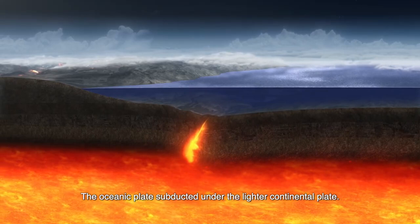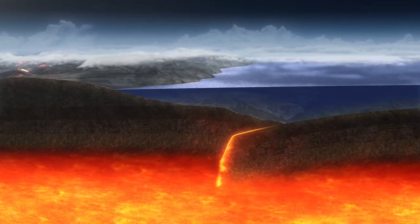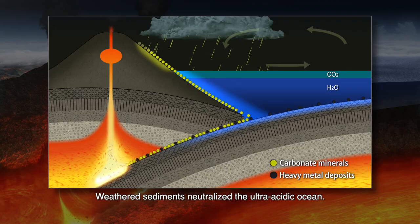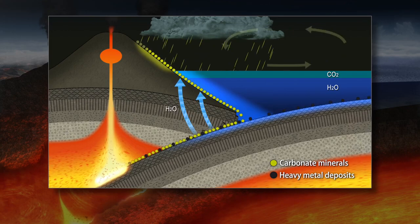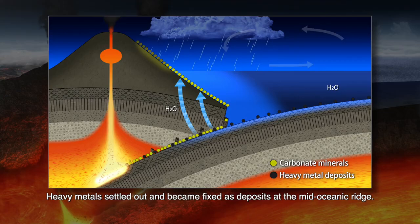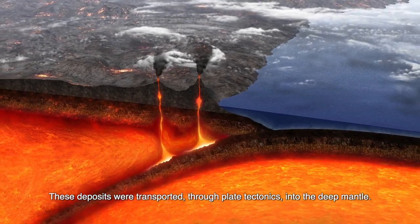The oceanic plate subducted under the lighter continental plate. Weathered sediments neutralized the ultra-acidic ocean. Heavy metals settled out and became fixed as deposits at the mid-oceanic ridge, and these deposits were transported through plate tectonics into the deep mantle.